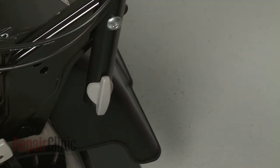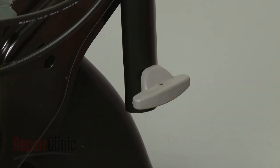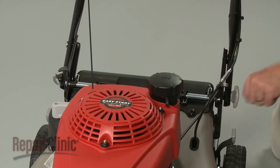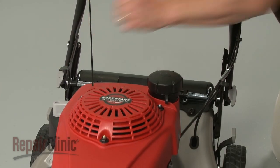Rotate the knob a quarter turn. Lower the handle to the desired position. Then rotate both knobs a quarter turn to secure.